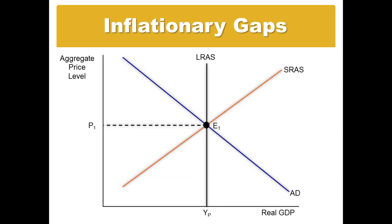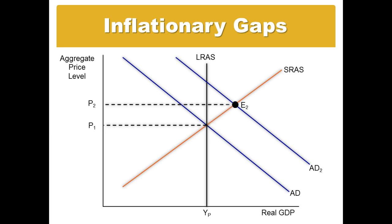Graphically, we can look at an inflationary gap as a right shift in aggregate demand. In a situation like the highways, the government increases its spending, so aggregate demand shifts to the right, and we go from equilibrium point E1 up to equilibrium point E2 at price level P2 and output level Y2. The inflationary gap is the difference between actual output and potential output. Not only is output greater, but in the case of an increase in aggregate demand, the price levels have also risen from their original long-run equilibrium point.